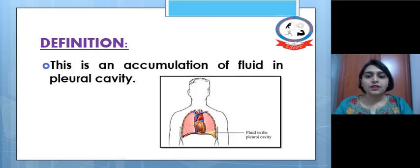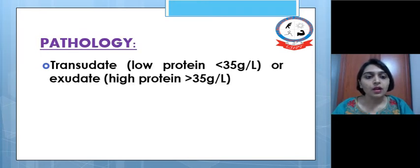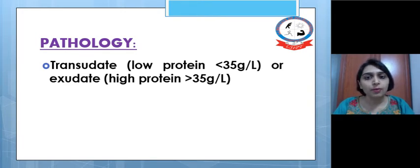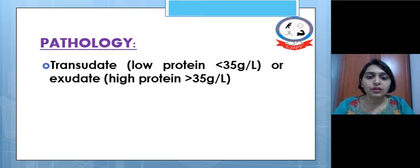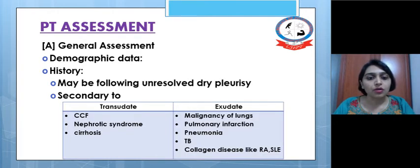Let's see first the definition. Pleural effusion is an accumulation of fluid in the pleural cavity. If we see the pathology, we may find either a transudate type of fluid inside the cavity or exudate. Transudate is usually of low protein, having less than 35 grams per liter, whereas exudate has high protein of more than 35 grams per liter. They both have different etiology.